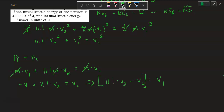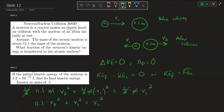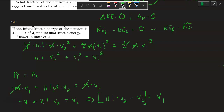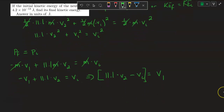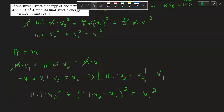We can now substitute this expression for V₁ into the energy equation. Substituting into 11.1V₂² + V₁² = V_initial², we replace V₁ with (11.1V₂ − V_initial) and square it. We'll need to foil out this squared binomial.